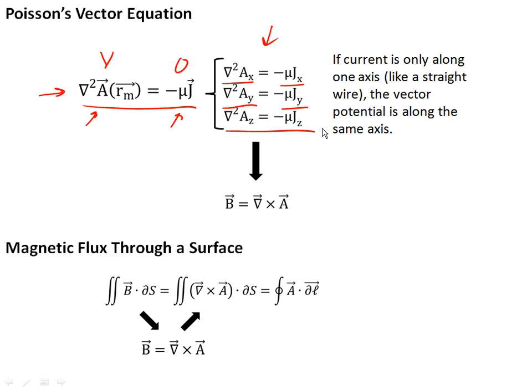And if the current is only along one axis, like having a straight wire, the vector potential is going to be along the same axis, and you only need to solve one of these things. And you can use the same types of numerical techniques here to calculate the vector potential when currents are known.